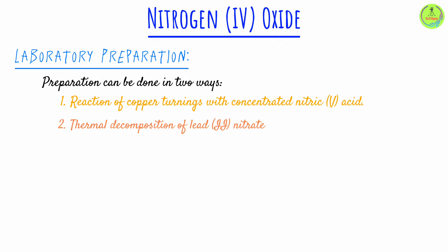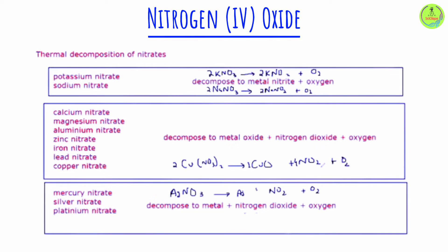Nitrogen dioxide can also be produced by heating a metal nitrate. You choose the nitrate of a metal that is moderately reactive — we're talking about lead, copper, zinc, calcium, and such — but lead(II) nitrate is the most suitable. All nitrates actually decompose on heating, but the nitrates of the moderately reactive metals decompose to form an oxide, nitrogen dioxide, and oxygen.